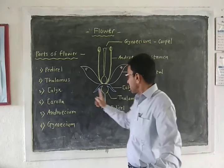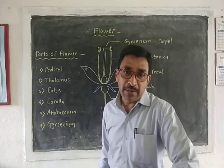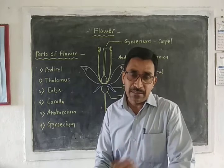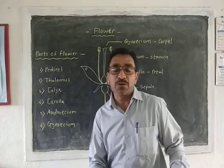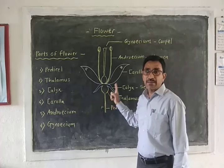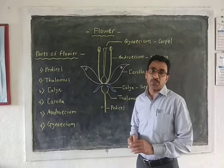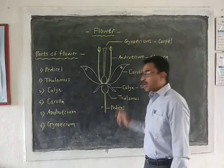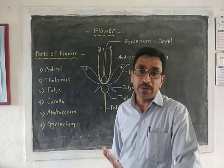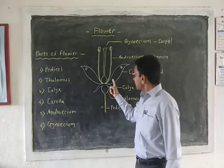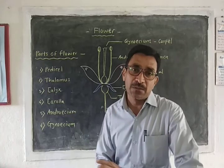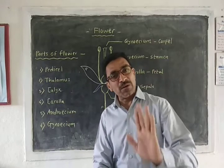The second part is the thalamus. It is the terminal, condensed, and enlarged portion of the floral axis. The thalamus is called the mother axis of the flower, because all the floral whorls — calyx, corolla, androecium, and gynoecium — arise from the thalamus.